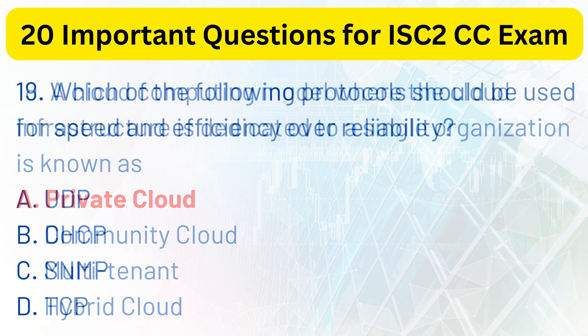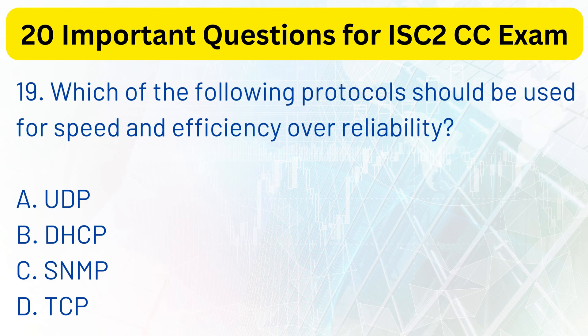Question 19. Which of the following protocols should be used for speed and efficiency over reliability? a. UDP. b. DHCP. c. SNMP. d. TCP. The correct answer is a. UDP.